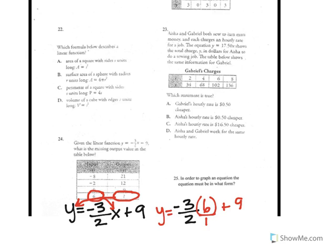So we plug in 6 for x to figure out what y is or what the output is. So then we would do negative 3 times 6, which is negative 18. And then 2 times 1, which is 2. And then we have our plus 9.